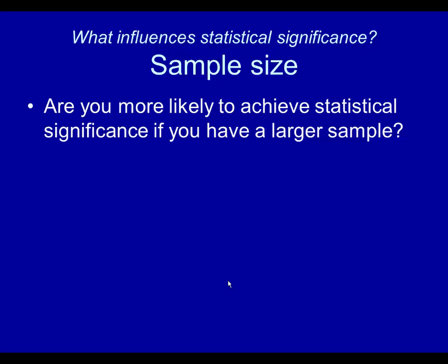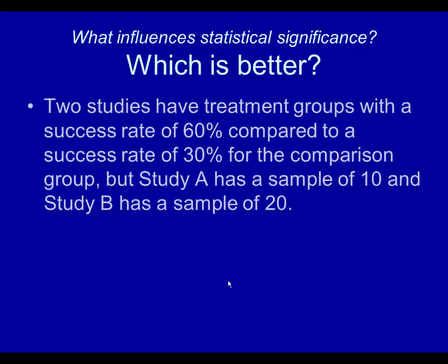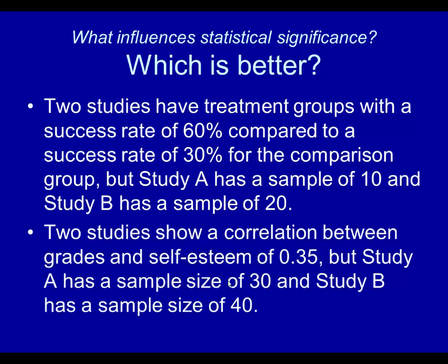Are you more likely to achieve statistical significance if you have a larger sample? Yes. Two studies have treatment groups with a success rate of 60% compared to 30% for the comparison group, but Study A has a sample of 10 and Study B has a sample of 20. Magnitude is the same — 60% versus 30% — but sample size is bigger for Study B, so Study B is more likely to have statistical significance. Similarly, two studies show a correlation between grades and self-esteem of 0.35, but Study A has a sample of 30 and Study B has a sample of 40 — again, Study B is better.